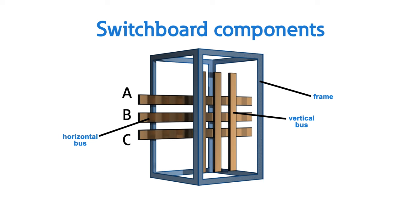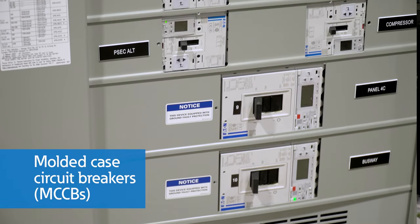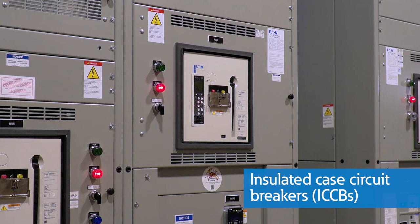In contrast, a vertical bus distributes power to the circuit protection devices within an individual section and is normally oriented either left to right or front to back. In most cases, insulation or dielectric strength between the three bus phases is provided via an adequate air gap. In locations where bus clearances are not sufficient to provide the necessary dielectric strength, insulation is applied to the bus. In switchboards, molded case circuit breakers are group mounted, while insulated case breakers are independently mounted with separation between breakers.